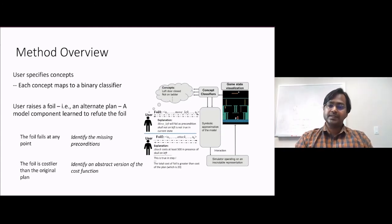For each of these concepts, the system has access to a classifier it can use to detect when that concept may be present or absent in a given system state. The actual explanatory interaction starts with the user raising a foil, that is an alternate plan that the user was expecting in the place of the plan the system is currently following.